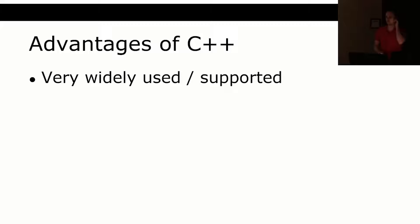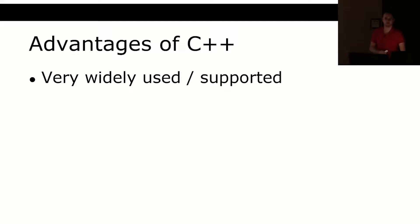Some of the advantages of C++ we'll be taking advantage of: it is very widely used and supported, and you'll always be able to find an answer to your C++ question. The same code runs on 32-bit Windows, 64-bit Windows, any Mac, and any Linux distribution. The only difference is when downloading the SFML library, you choose the 64-bit or 32-bit version. Since nobody is likely still using a 32-bit OS, we'll use the 64-bit version for everything in this course.